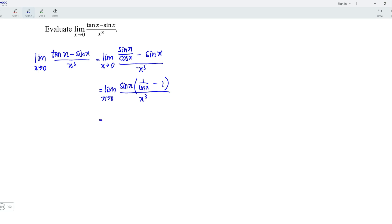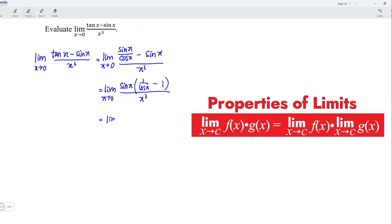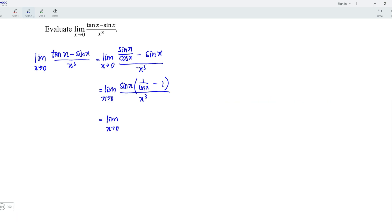By using the properties of a limit, we could rewrite the limit as x approaches 0 for the function sine x divided by x, multiplied by the limit x approaches 0 for the function 1 over cos x minus 1 divided by x squared.